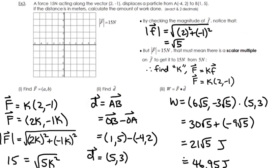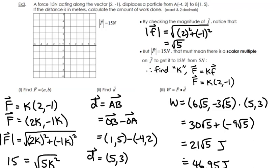Let's muster up some brain juice for this tricky question. A force of 15 newtons acting along the vector (2, -1) displaces a particle from A to B. If the distance is in meters, calculate the amount of work done. Since no theta is mentioned, we'll probably just do the dot product. First, orient ourselves: we have two coordinates — A and then B somewhere above — and it's being displaced in that direction. That's our displacement vector.